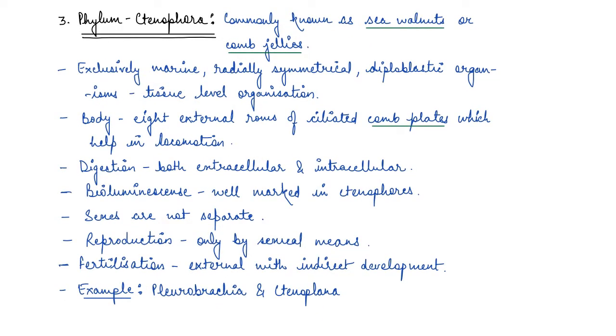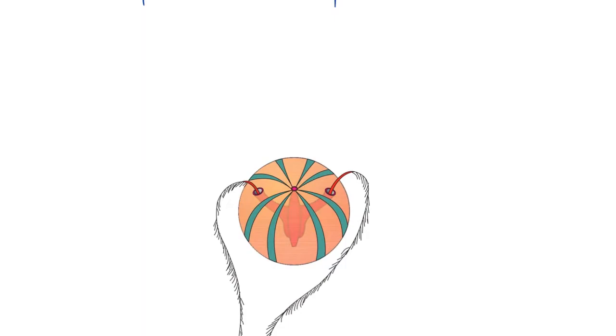These Ctenophores are basically exclusively marine. Their symmetry is radial - they are radially symmetrical. They have two layers of organization which is ectoderm and endoderm, so they are diploblastic in nature and then they have tissue level of organization. Their body is ciliated. The body has eight external rows. If you see the diagram, you can see there are eight rows.